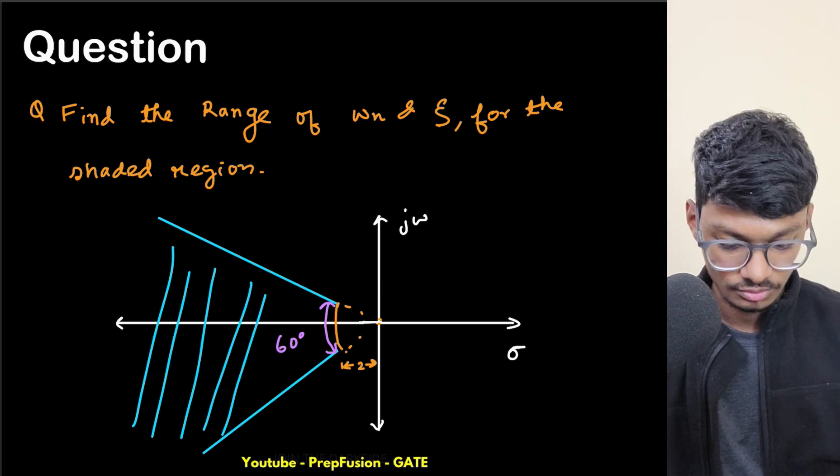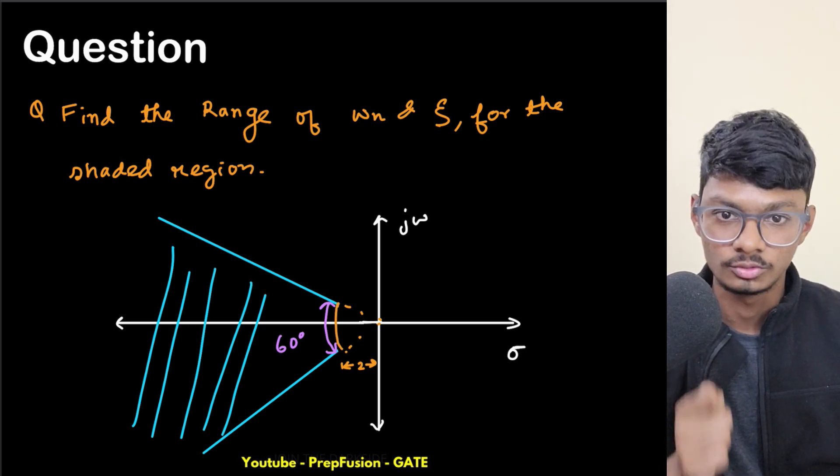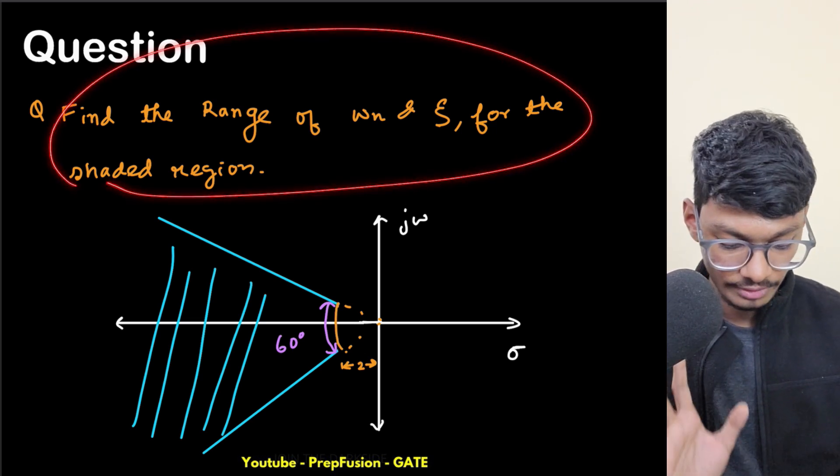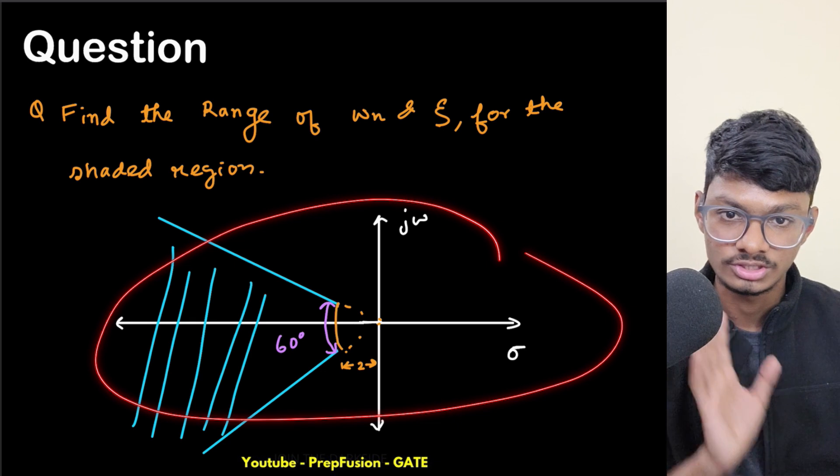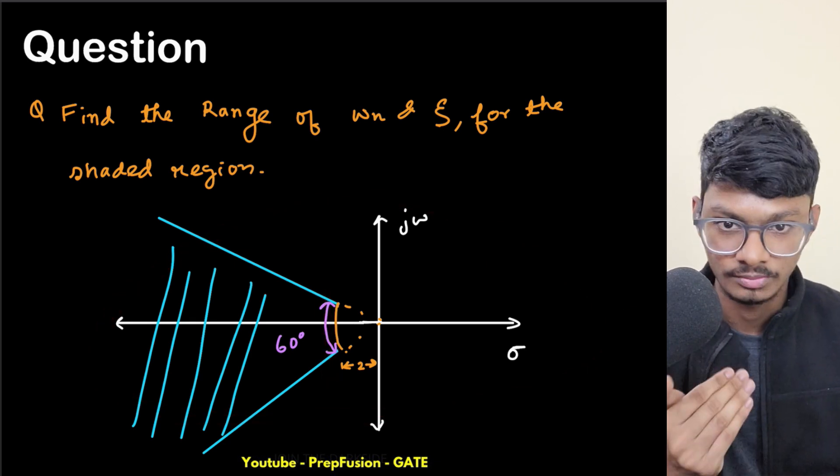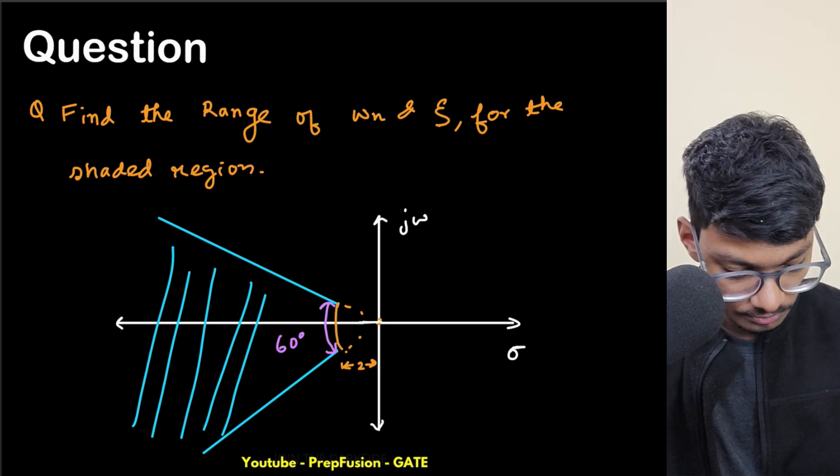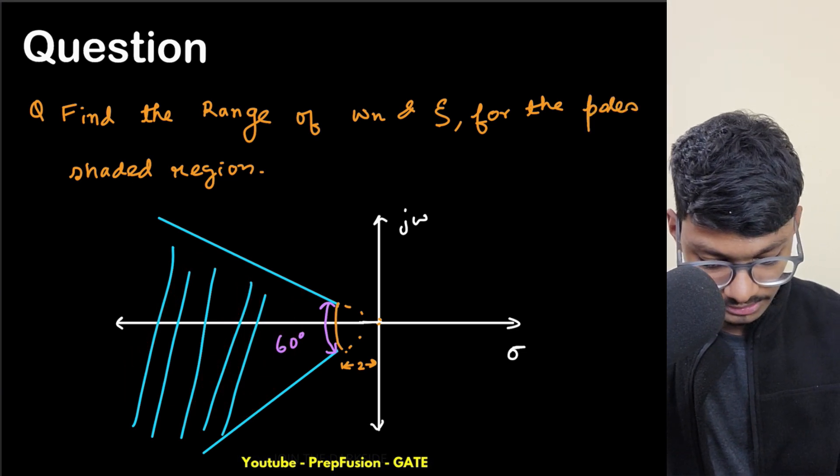Hi everyone and welcome back to Prepfusion. Today we are solving another GATE 2024 question of instrumentation engineering. This is from control systems where they have given the sigma-j-omega plane and they have given the location of the poles so the poles lie in this shaded region.